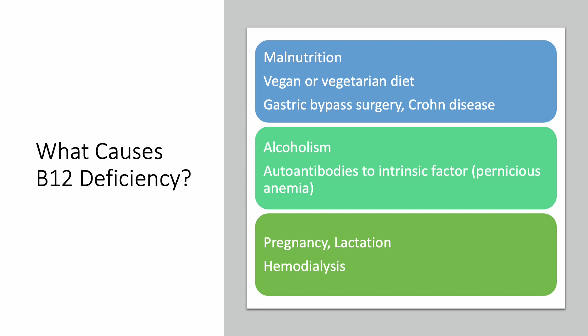We suspect B12 deficiency in anyone who is malnourished, following a strict vegan or vegetarian diet, or who has had a gastric bypass surgery. Someone with Crohn's disease — which affects the last portion of the small intestine, the ileum, where B12 is absorbed — is also at risk. Alcoholism is a common cause of deficiency of many vitamins. If there are antibodies to the intrinsic factor, B12 deficiency results, and this specific cause of anemia is called pernicious anemia, meaning malignant anemia.